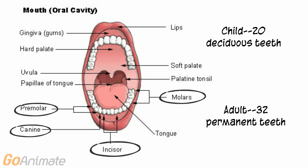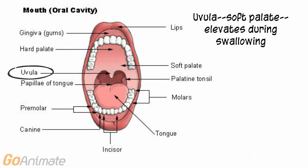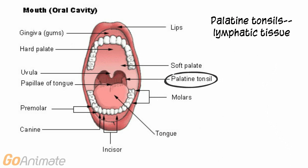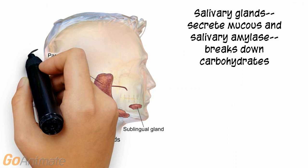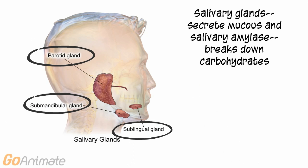Children have 20 deciduous or temporary teeth while adults have 32 teeth. The uvula, which is part of the soft palate, rises when swallowing. We can also see the palatine tonsils. The salivary glands secrete mucus and salivary amylase, which breaks down carbohydrates. There are three pairs of salivary glands: the parotids, sublinguals, and submandibular glands.